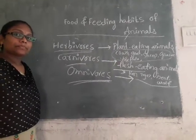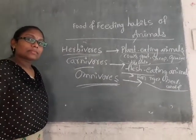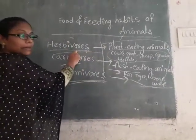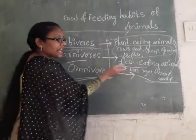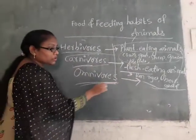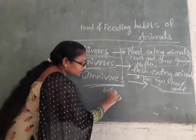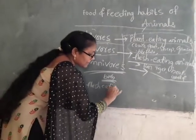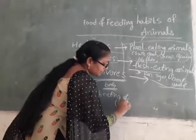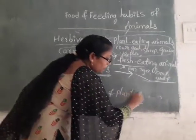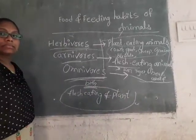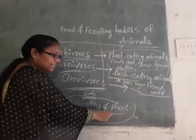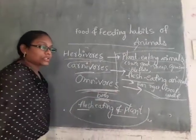Omnivores means both flesh-eating and plant-eating animals. Plant-eating animals alone are called herbivores. Only flesh-eating animals are called carnivores. Omnivores means both — both flesh-eating and plant-eating animals are called omnivores. For example, cat eats both flesh and plants.